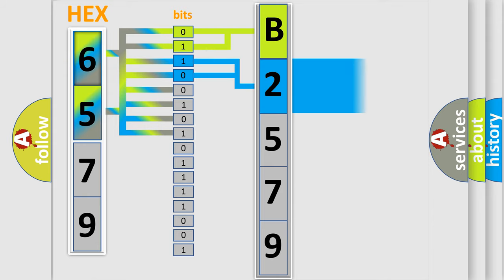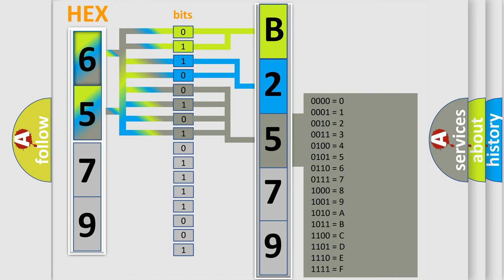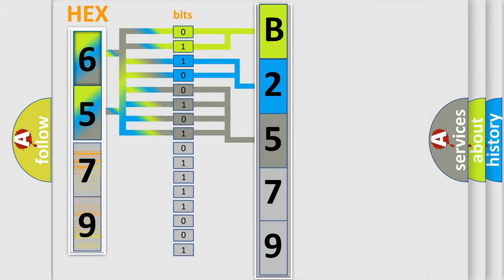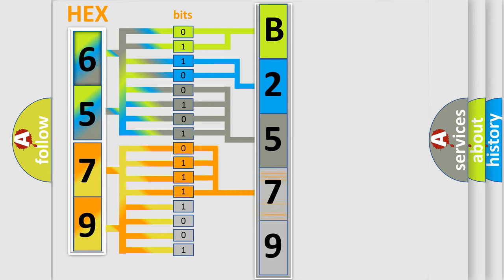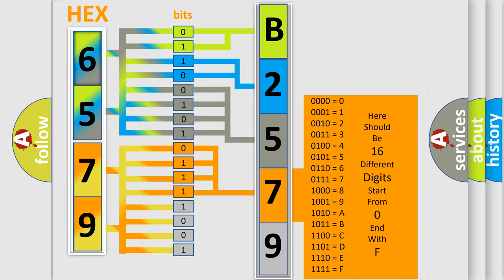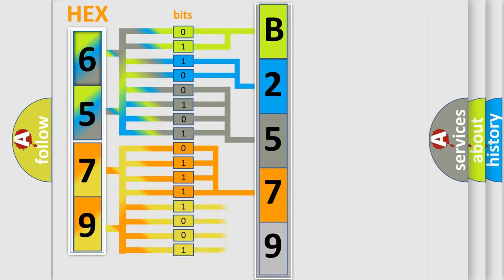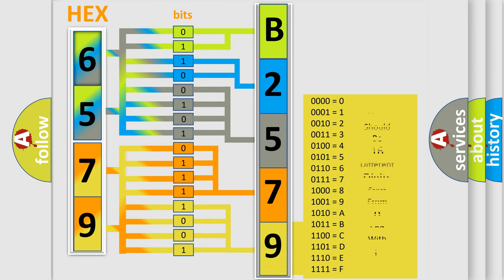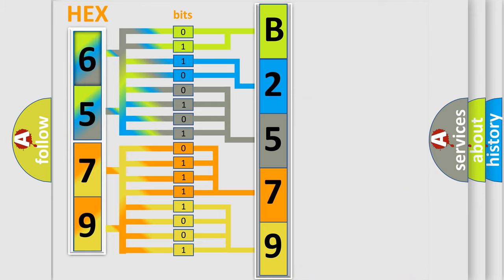The next two bits determine the second character. The last bit styles of the first byte define the third character of the code. The second byte is composed of a combination of eight bits. The first four bits determine the fourth character, and the last four bits define the fifth character. A single byte conceals 256 possible combinations. We now know how the diagnostic tool translates the received information into a more comprehensible format.